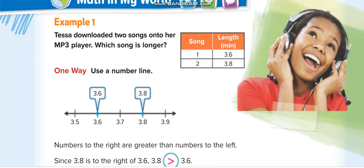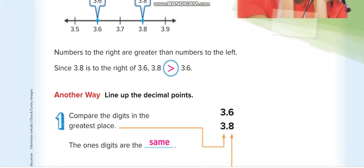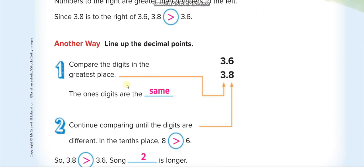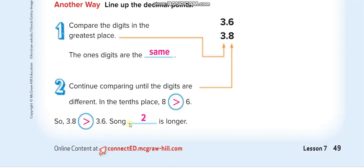8 is greater than 6, so 3.8 is greater than 3.6. At the ones place they're the same, and at tenths place 8 is greater than 6. So how much greater? The song is 2 tenths longer, and if you minus, it is 0.2, this much greater. Got it, guys?